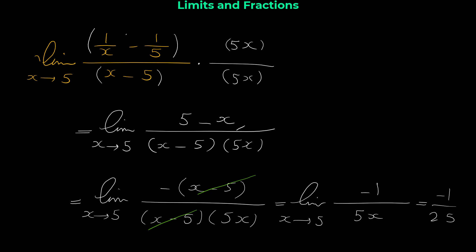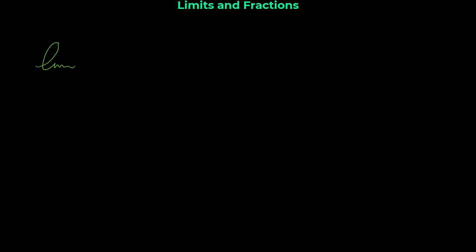Let me show you another example. We want to find the limit of 1 over (1 + x) minus 1 over (1 − x), all over x, as x approaches 0. Again the problem here is those fractions, and we have to try to get rid of them.